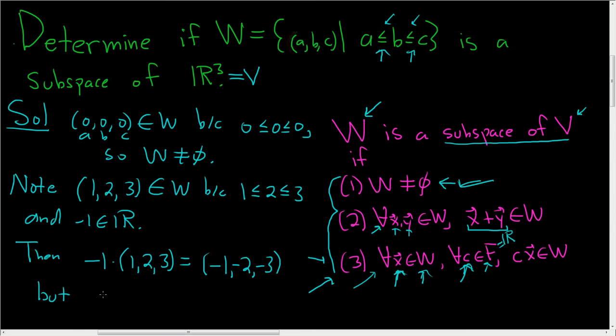Is it true that negative 1 is less than or equal to negative 2, which is less than or equal to negative 3? Is that condition true? Let's think about it. Where's negative 1? Here's negative 1, here's negative 2, and here's negative 3. So this is not true. So this is not in W.